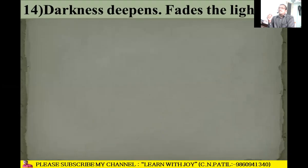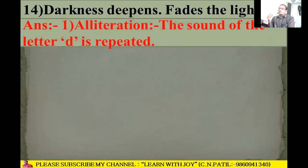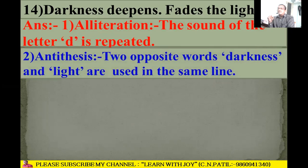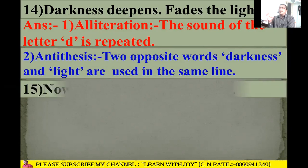Next line: 'Darkness deepens fades the light.' Alliteration is there because the 'd' sound repeats: 'd' in 'darkness' and 'd' in 'deepens.' Antithesis is also there because two opposite words are placed together: 'darkness' and 'light.'